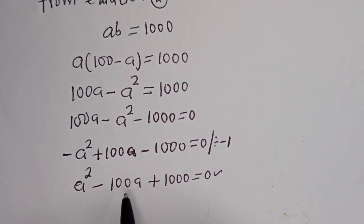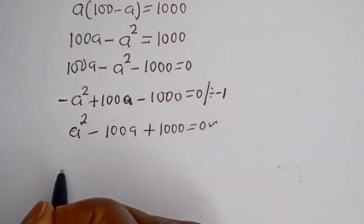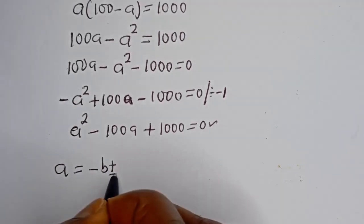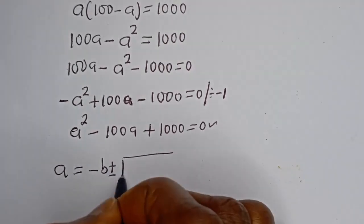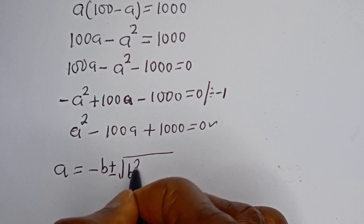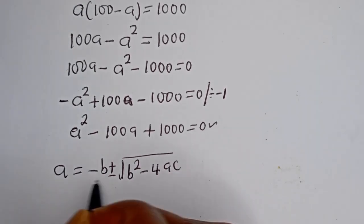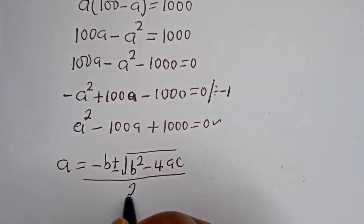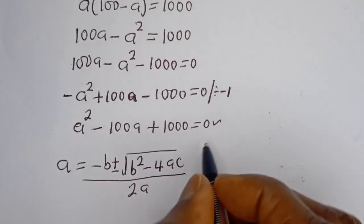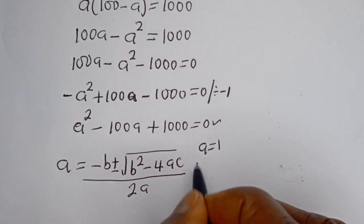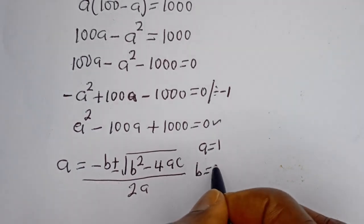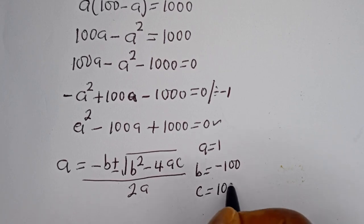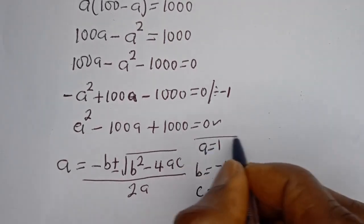Let's solve this using the quadratic formula: A is equal to minus b plus or minus the square root of b squared minus 4ac, all over 2a. From this equation, a equals 1, b equals minus 100, and c equals 1,000.